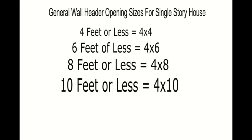To recap the chart: four feet or less — four by four; six feet or less — four by six; eight feet or less — four by eight; ten feet or less — four by ten. The key is the number at the end matches the opening size. For a single-story home with a roof that doesn't carry excessive weight, this works well. However, if you're in an area with snow loads, these numbers could all change — these are the numbers used in Southern California.